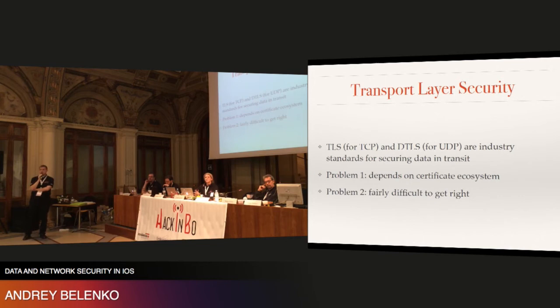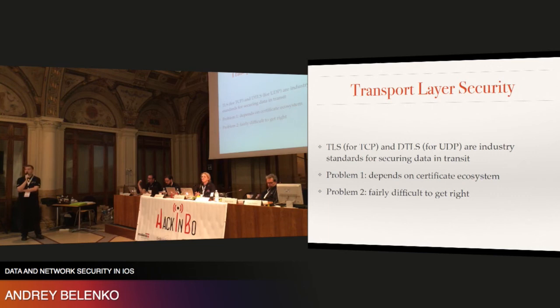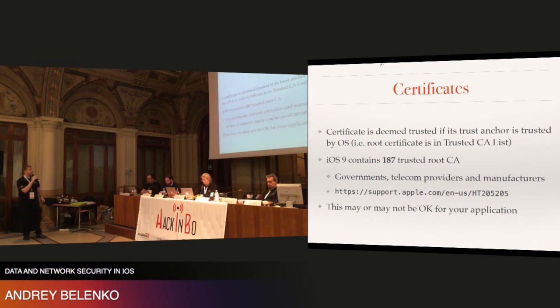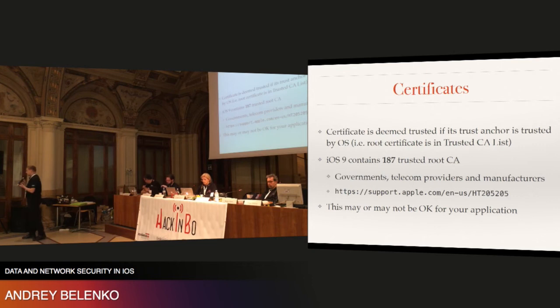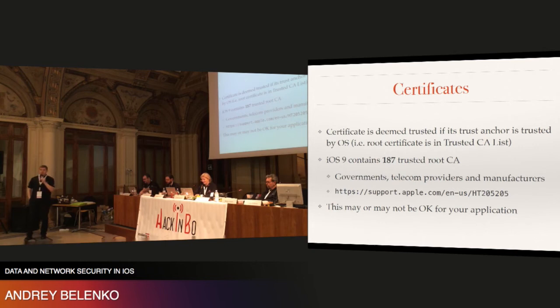This sounds like good news — we have a standard, so let's just use it. Well, not so fast. There are two fundamental problems with TLS and DTLS. First, they both depend on certificates. Second, both are fairly difficult to get right. The certificate ecosystem works by having a number of trusted certificates in the operating system. A certificate for a given server is deemed trusted if its trust anchor is one of those trusted certificates. The problem is that iOS 9 contains 187 trusted certificates, and you have no control over which ones you trust.